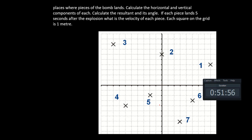Let's take a look at the next problem. An explosion takes place and we define the place of the explosion at the origin. There are seven places where pieces of the bomb land. Calculate the horizontal and vertical components of each, calculate the resultant and its angle. If each piece lands five seconds after the explosion, find the velocity. Each square on the grid is one meter.